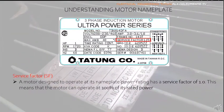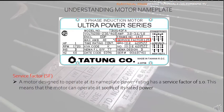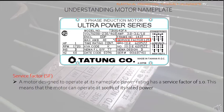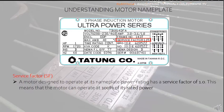Service Factor, denoted by SF: A motor designed to operate at its nameplate power rating has a service factor of 1.0, meaning it can operate at 100% of its rated power. In this example, a service factor of 1.15 means you can operate the motor at 115% of its rated power — so this motor can operate at a maximum of 1.15 horsepower.